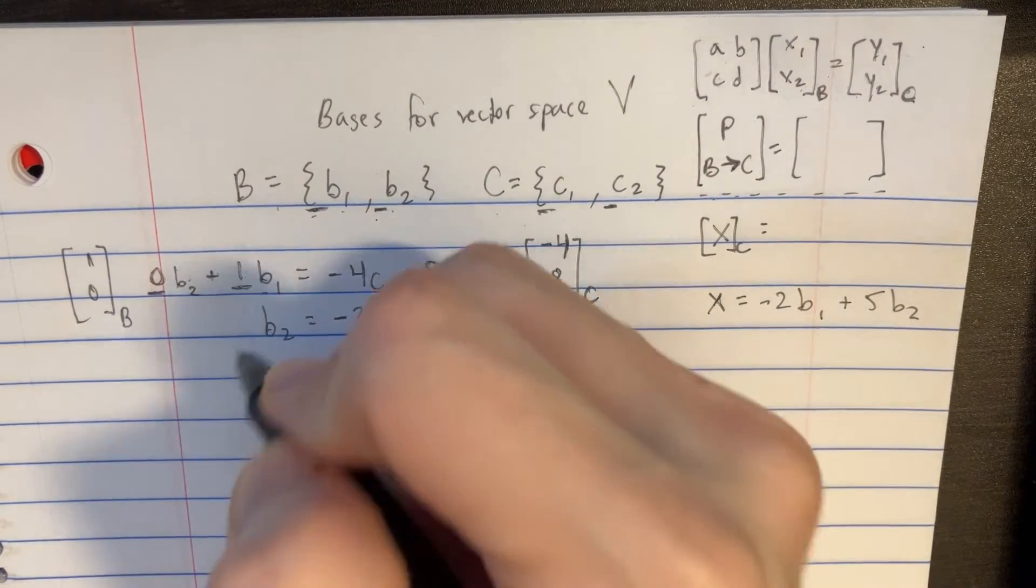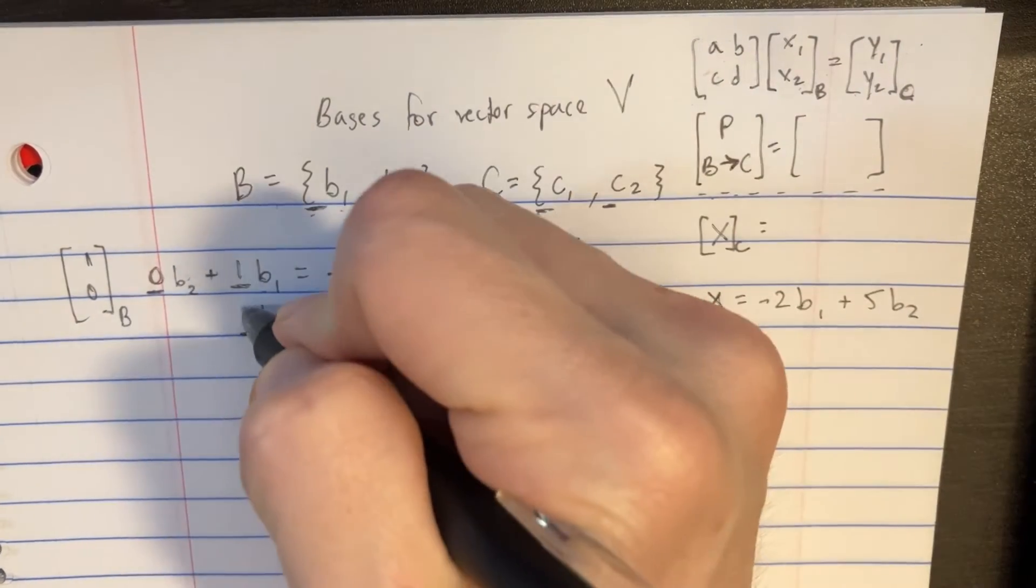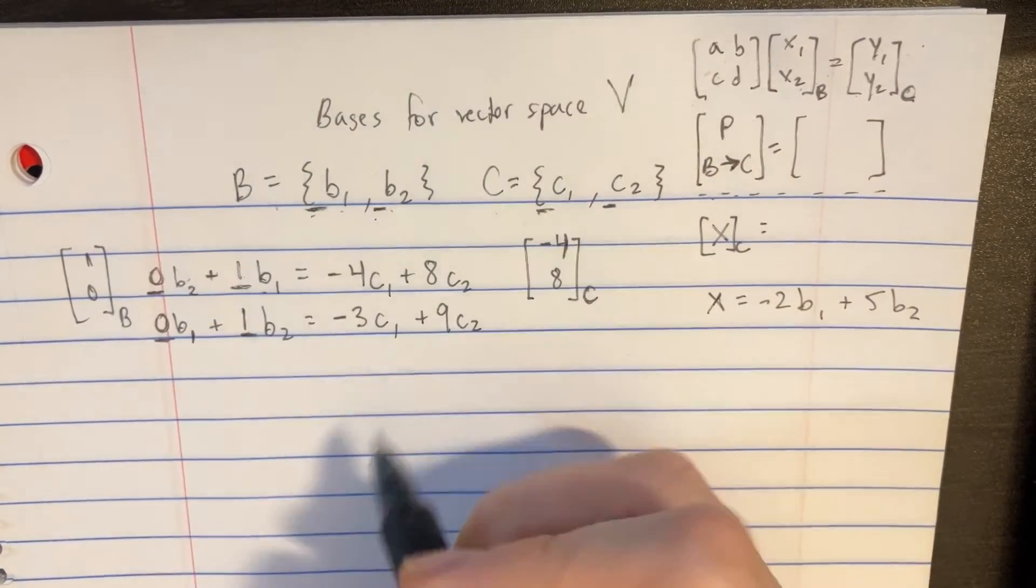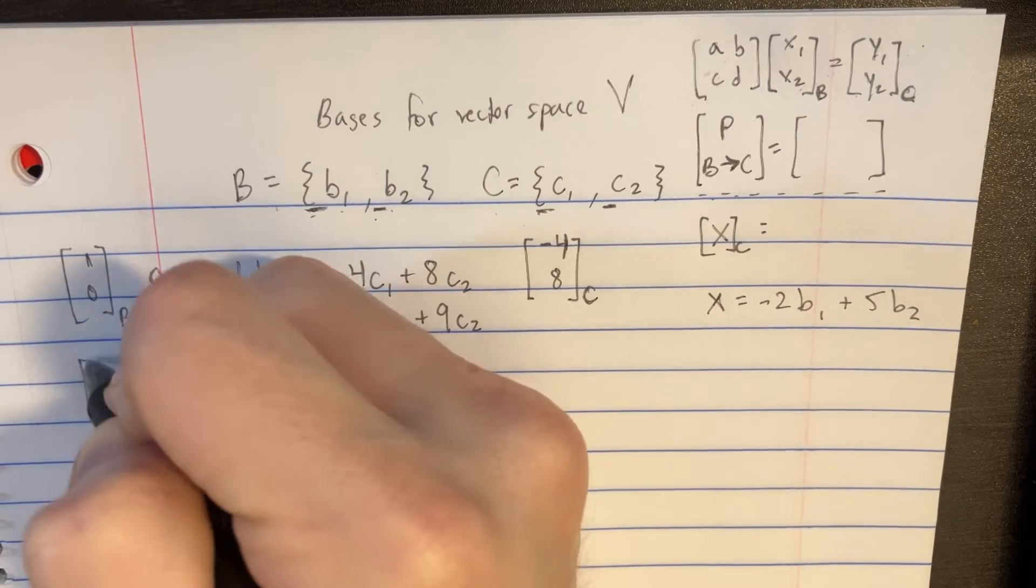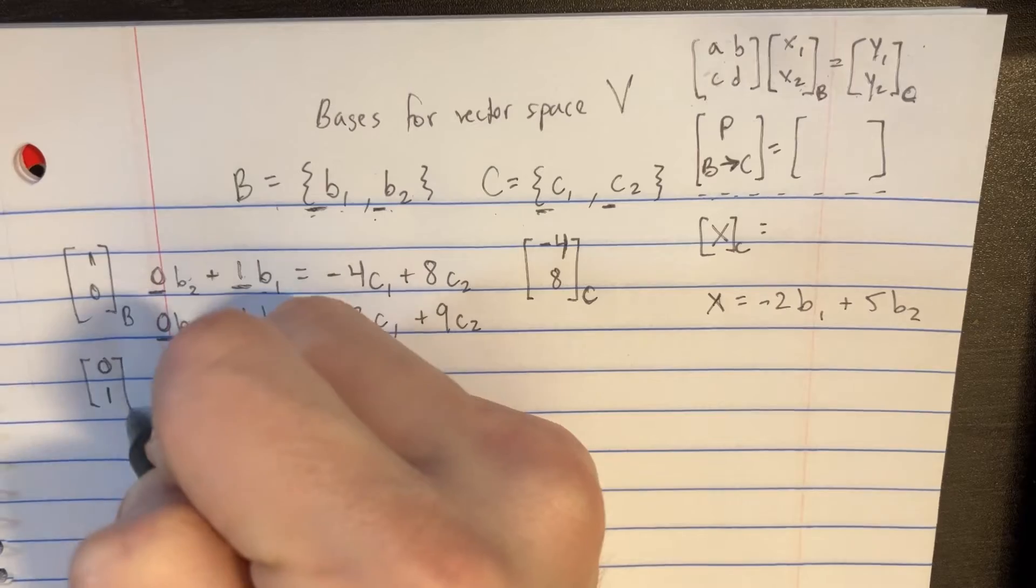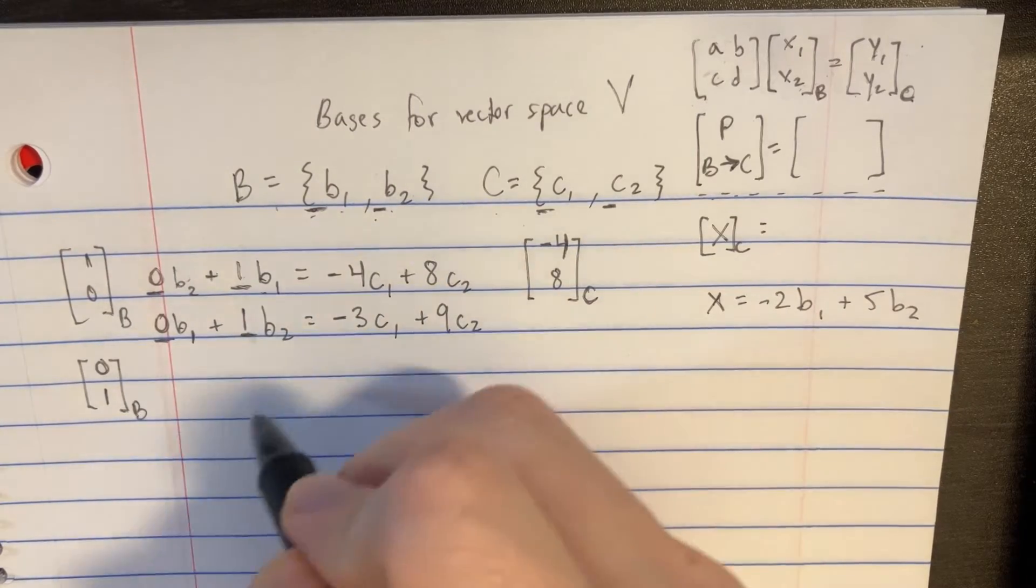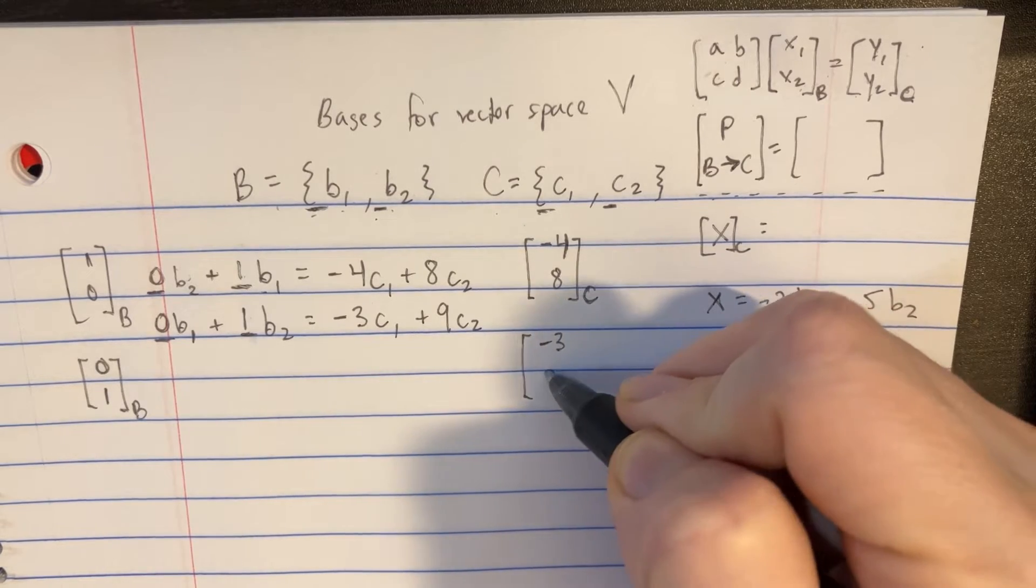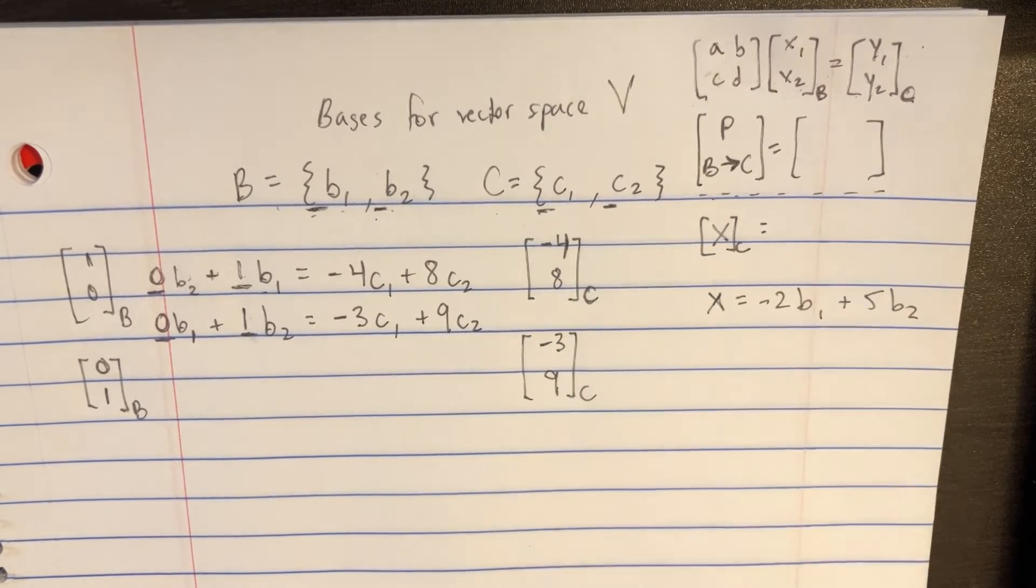We can do the same thing for the second equation. So let's put one of the B2s here, and let's realize we would need zero of the B1s. So this gives us this other vector here that would be like 0 and 1 using basis B. And then that's going to be the same thing as using negative 3 and 9 from the C here.